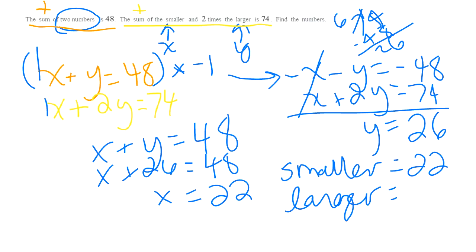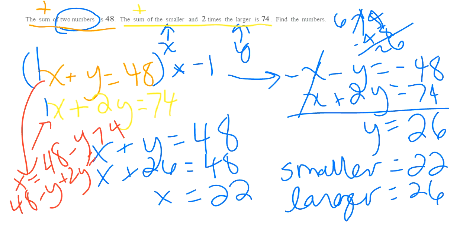So that is, and again, there's more than one way to solve it. If you had wanted to do substitution, you could have taken this first equation and subtracted Y from both sides and gotten X equals 48 minus Y. And then plugged that in to the other equation. So you'd have 48 minus Y plus 2Y equals 74. And then solved that and you would have gotten the same answer. So there's more than one way. Once you know how to set it up, you can choose substitution or addition, whichever makes the most sense to you.